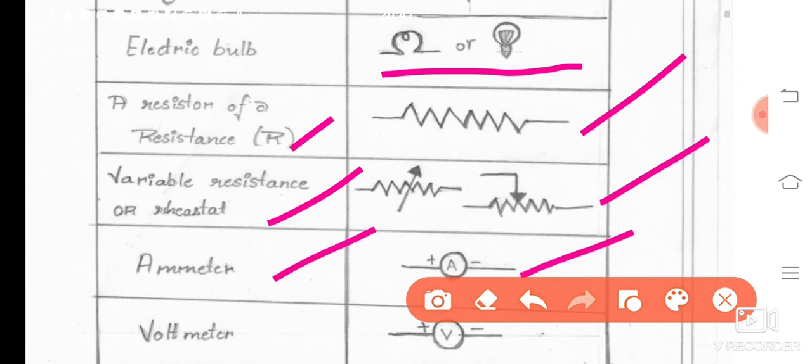Ammeter. This is an ammeter symbol. This ammeter in an electrical circuit, we connect it in a series wise. So then comes to voltmeter. This voltmeter is connected in the circuit in parallel.